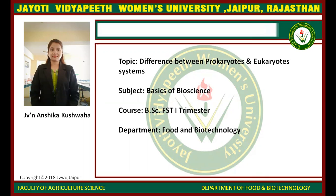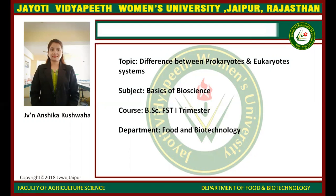Prokaryotic cells were the first to appear for billions of years and were the only life form on earth, and all prokaryotic organisms are unicellular. Eukaryotic cells appeared on earth long after prokaryotic cells, but they are much more advanced. Eukaryotic organisms, unlike prokaryotes, can be unicellular or multicellular. Prokaryotes are the simplest and oldest type of cells, appearing about a whole billion years ago.